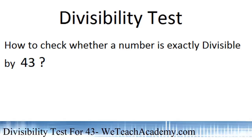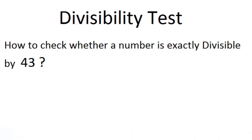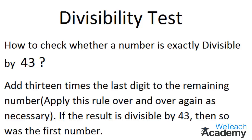Welcome to vteachacademy.com. Today we are going to discuss the divisibility test for the number 43 — that is, how to check whether a number is exactly divisible by 43. To check this, add 13 times the last digit to the remaining number. Apply this rule over and over again as necessary. If the result is divisible by 43, then so was the original number.